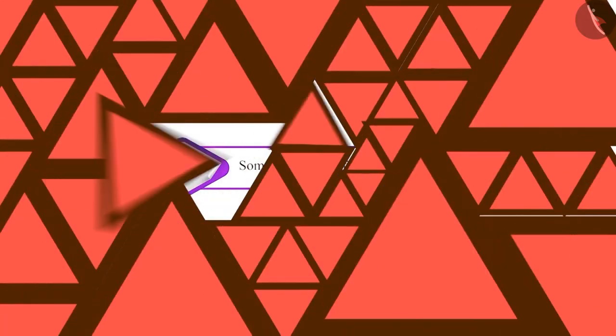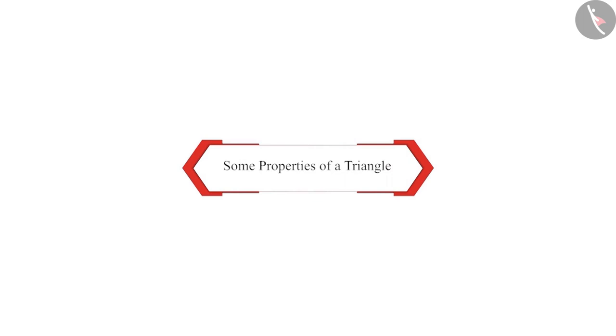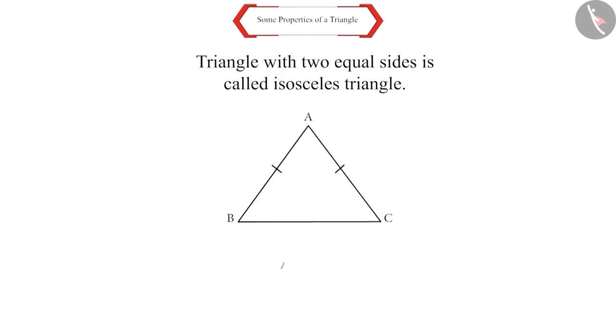Especially those triangles that have two equal sides. Friends, in the previous session we have learnt that a triangle with two equal sides is called an isosceles triangle.